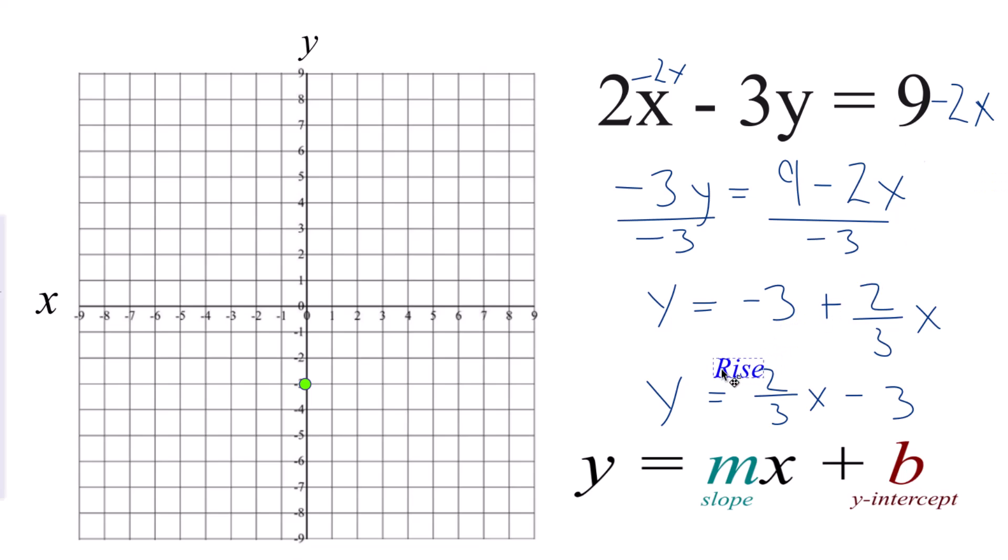Now we have 2. That's our rise. 3 is the run. This is the slope. So we'll go here, we'll rise 1, 2, and we'll go 1, 2, 3 over here. We've got our point.